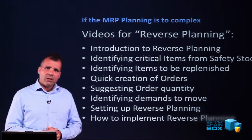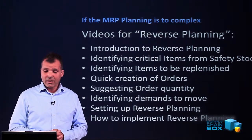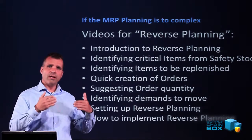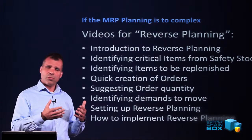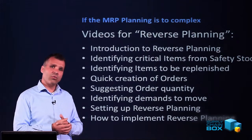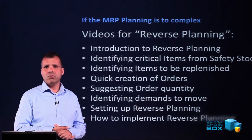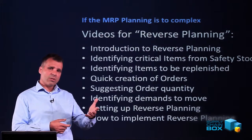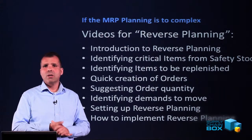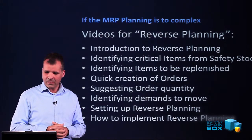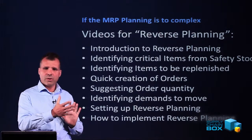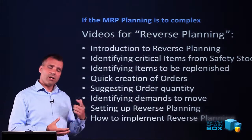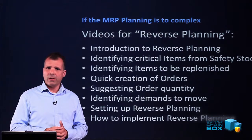Here is an overview of the videos in the reverse planning suite. This introduction video is the first. Then there's a video on identifying critical items based on safety stock or zero. Another video shows how to find items to replenish based on reorder point. There's a video on creating orders quickly with the quick journal, and a video on suggesting order quantities based on different parameters — still only one line per location per item but with more intelligent quantity suggestions. There's also a video on moving demands, and two setup videos: one on how to configure reverse planning in NAV, and one for developers on how to implement reverse planning quickly in your NAV database.